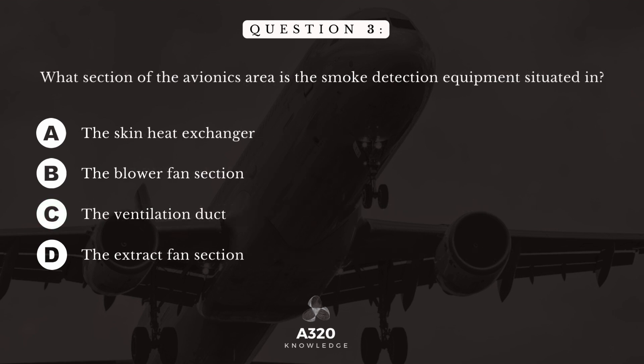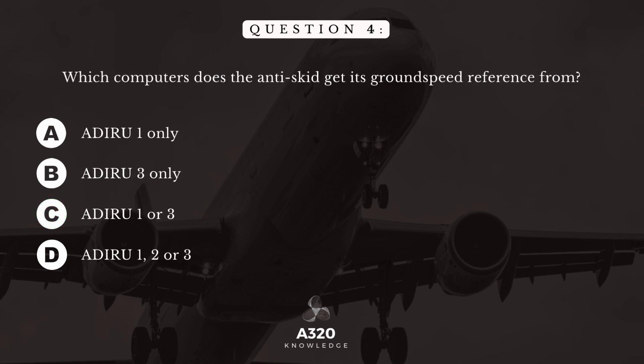Question 3. What section of the avionics area is the smoke detection equipment situated in? The answer is: the ventilation duct. Question 4. Which computers does the anti-skid get its ground speed reference from? The answer is: ADIRU 1, 2 or 3.